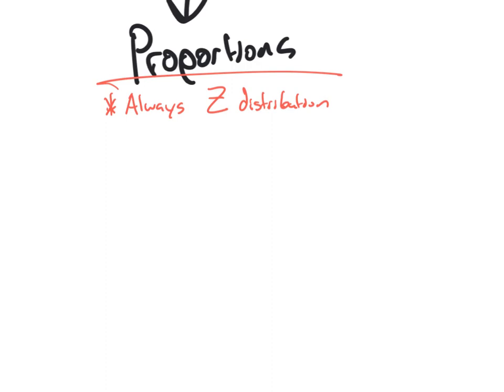Let's talk proportions: the hypotheses. You will always have a null hypothesis, and you will always say p — not p-hat. Always write p equals some value. That value is typically going to be given to you as some kind of statement, like 'we know the national proportion of United States teams who have voted is blank' — they're going to give us the number.